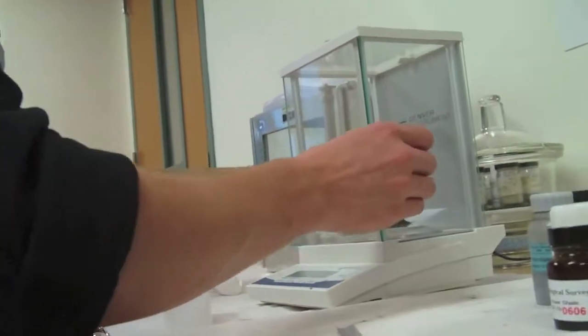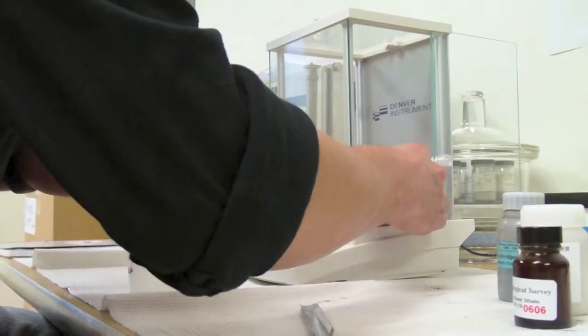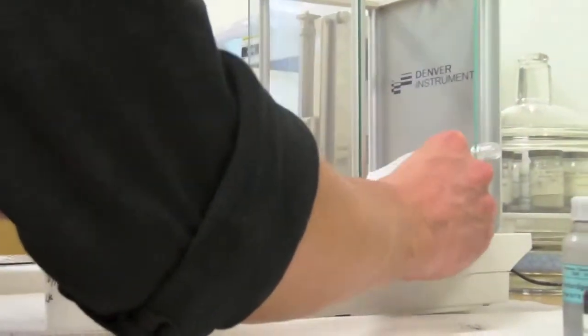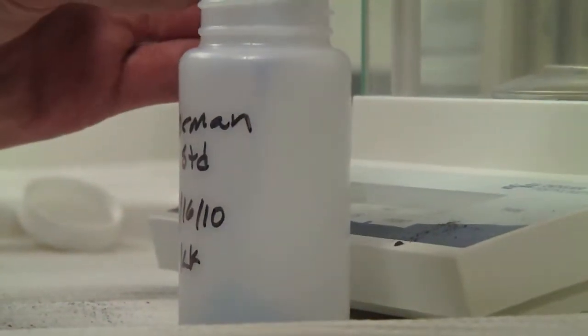Okay, we weighed out the sample plus or minus point zero zero one grams. Now we take it out of here and try to spill very little, or none at all. This is probably the goal. And we put it into one of these things, the German standard.